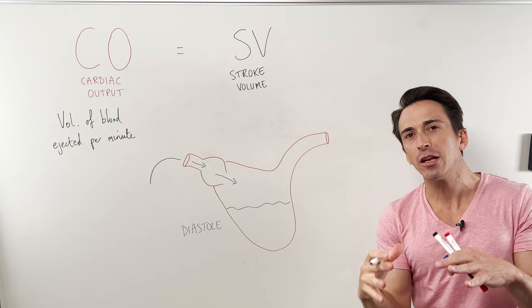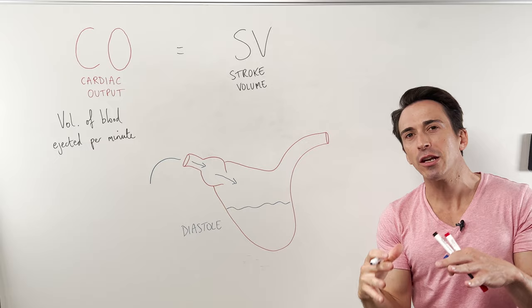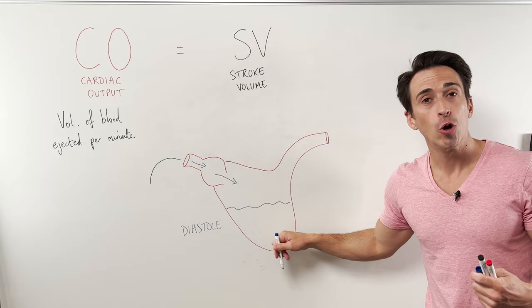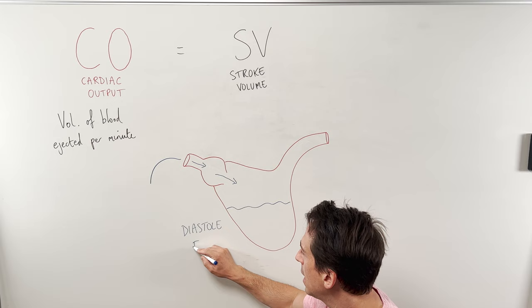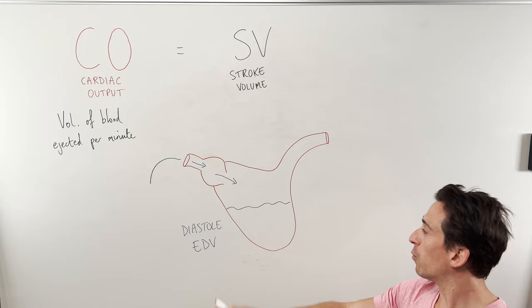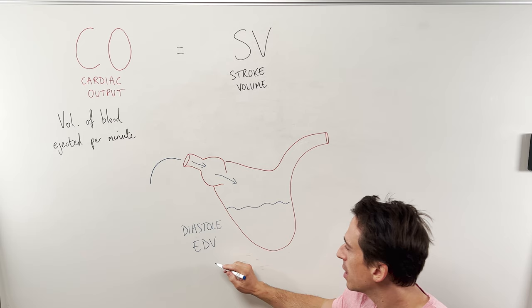Right at the very end of relaxation, you're going to have a particular volume of blood in the heart. We call that the end diastolic volume, or EDV — the amount of blood that will maximally fill the heart at the end of relaxation. On average, that volume is around about 130 milliliters.